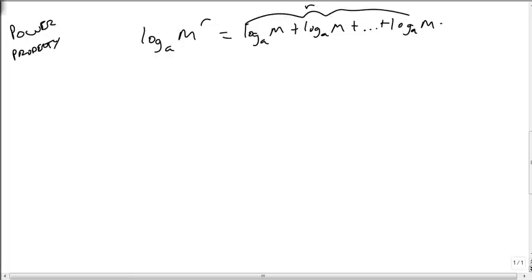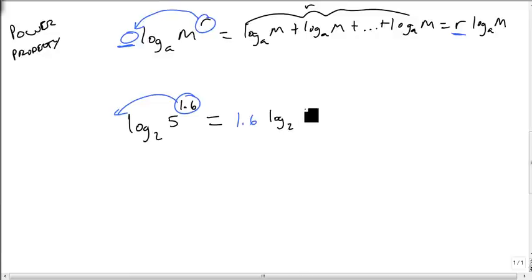And repeated addition becomes multiplication. And so the real rule is, if we have a power of something inside a logarithm, we just move that power to the outside. So, for instance, if we had log base 2 of 5 to the 1.6, we just grab that power, move it to the front, and get 1.6 log base 2 of 5. Because multiplication is a little bit easier than powers, and it makes our log smaller when we try and look it up in the table as well.